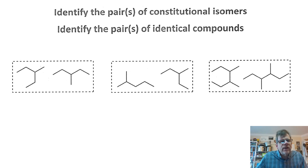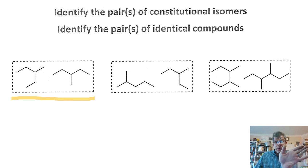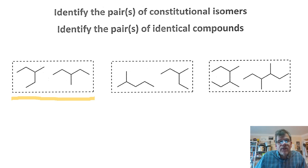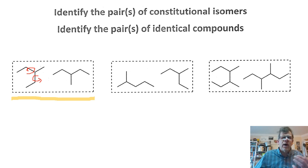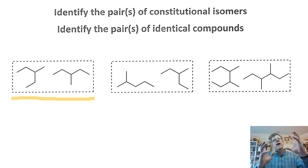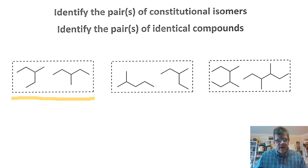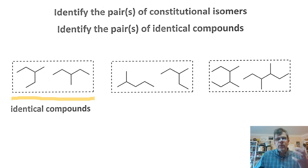The same carbon compound can be drawn 180 degrees disposed and look different. Remember that carbon-carbon single bonds allow free rotation, which can make the same compound appear different and potentially be mistaken for constitutional isomers when they're not. Indeed, the first pair here are identical compounds. We'll get into a nomenclature system that ultimately confirms this.